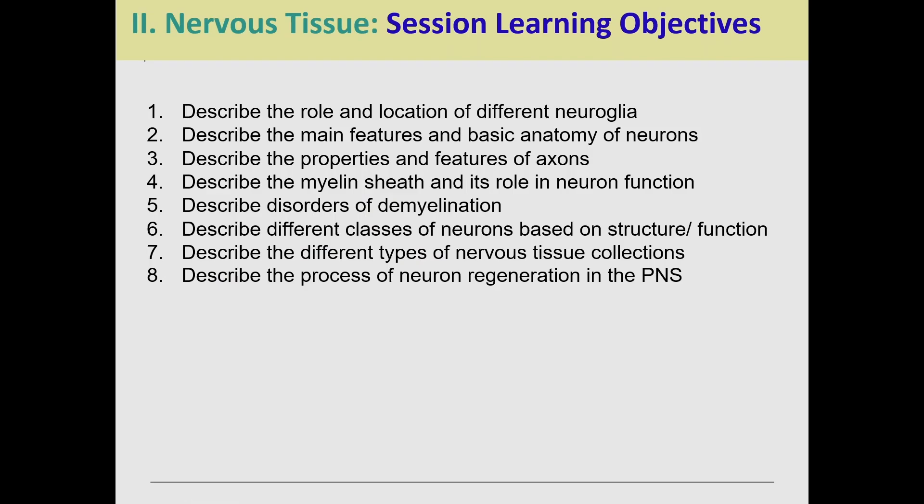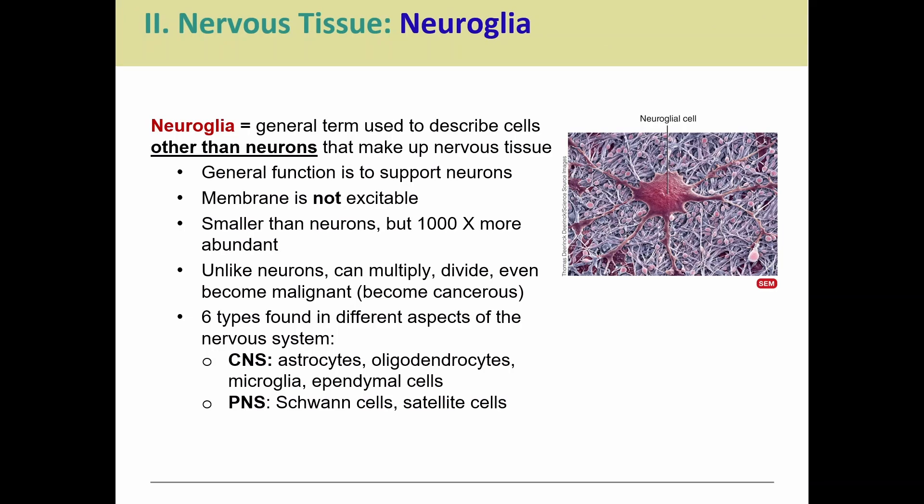So now we're going to get into nervous tissue. I'm actually going to split this into two videos so we don't have too long of a video, but we're going to get into neuroglia and neurons. We'll talk about the different neuroglia, talk about different types of neurons, talk about the basic anatomy of both, and then get into what the individual parts of the neuron are doing, how they're helping, and of course talk about certain disorders that are involved with neuroglia or neurons. We're going to focus on the neuroglia for this video and then get into the neurons in the next one.